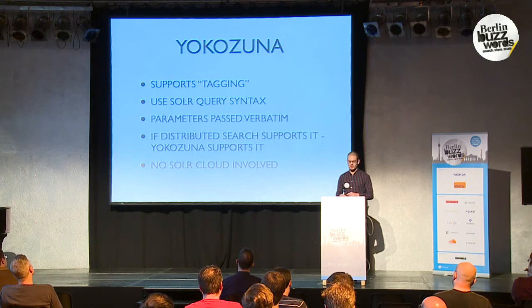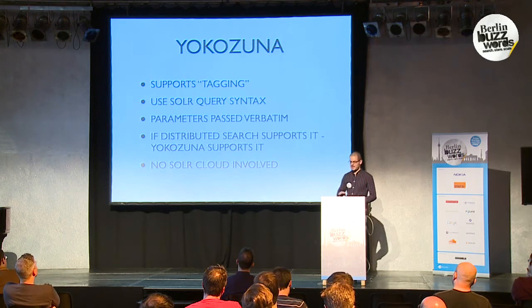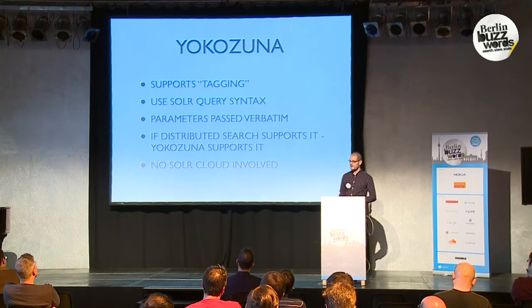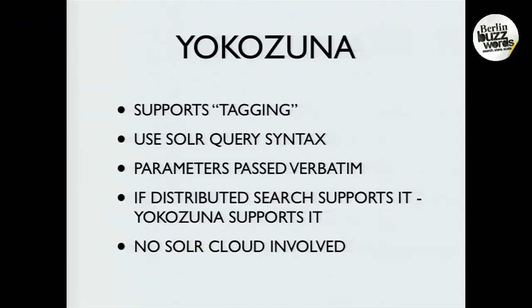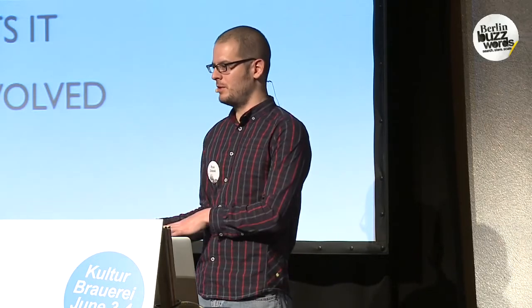Yokozuna also supports tagging. The idea is similar to secondary indices — maybe your value is opaque and Solar wouldn't understand how to index it. Tagging allows you to add metadata to it, or even if it was plain text or JSON, maybe you just want to add user tags, and you can query on them. Yokozuna uses the Solar query syntax — it doesn't try to add a facade on top currently. So if you already know how to run queries against Solar, you can query Yokozuna. The parameters are passed through verbatim, and under the hood Yokozuna will use Solar's Distributed Search. I want to make it clear there's no Solar Cloud involved — I mean the Distributed Search that's been part of Solar for a while, not the new Solar Cloud stuff.